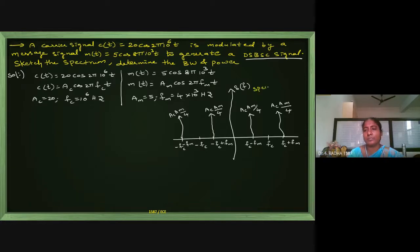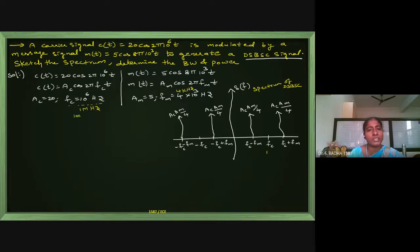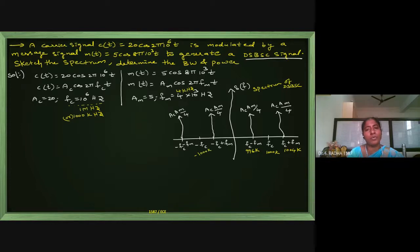In this DSB-SC spectrum, the carrier is at 1 MHz (1000 kHz). The upper sideband is at fc+fm = 1000+4 = 1004 kHz, and the lower sideband is at fc−fm = 1000−4 = 996 kHz. On the negative side, components appear at −1000 kHz, −996 kHz, and −1004 kHz.